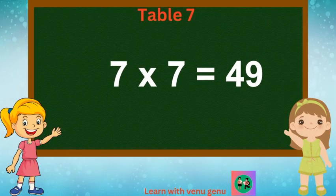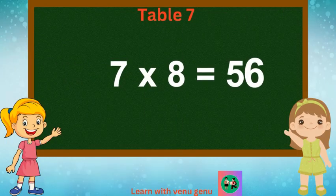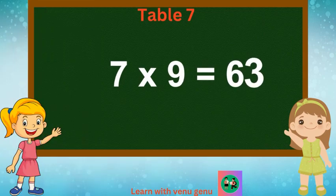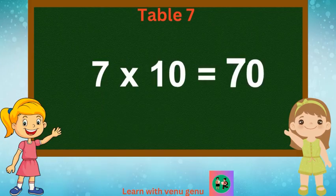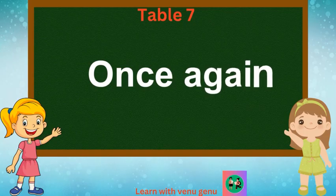7 7s are 49. 7 8s are 56. 7 9s are 63. 7 10s are 70. Once again.